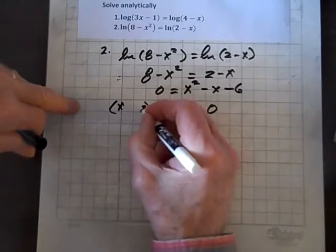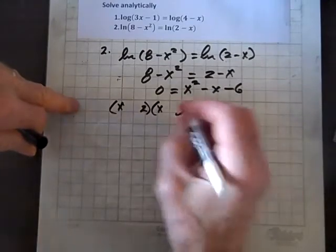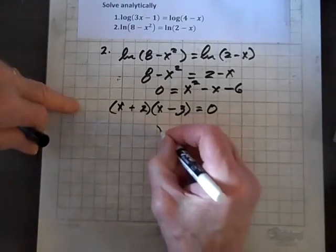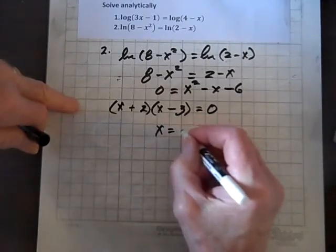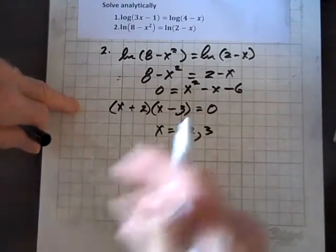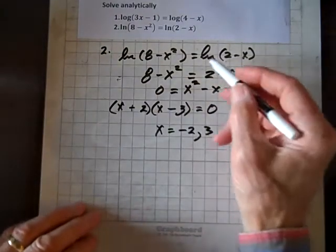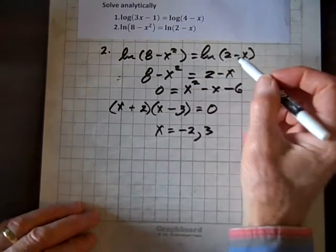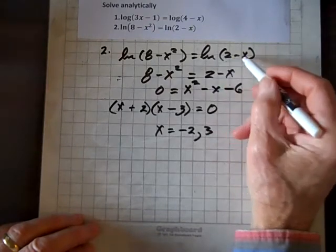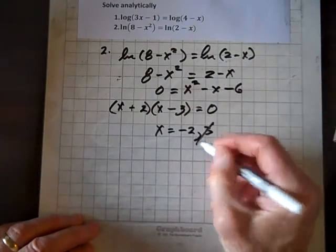And so we get an x and an x, and factors of 6 that have a difference of 1 are 2 and 3. And the negative goes with the 3, and the positive goes with the 2. So x equals, the solutions to this are negative 2 and 3. But we have to run these and check these solutions against the original equation and see if we need to throw one out.